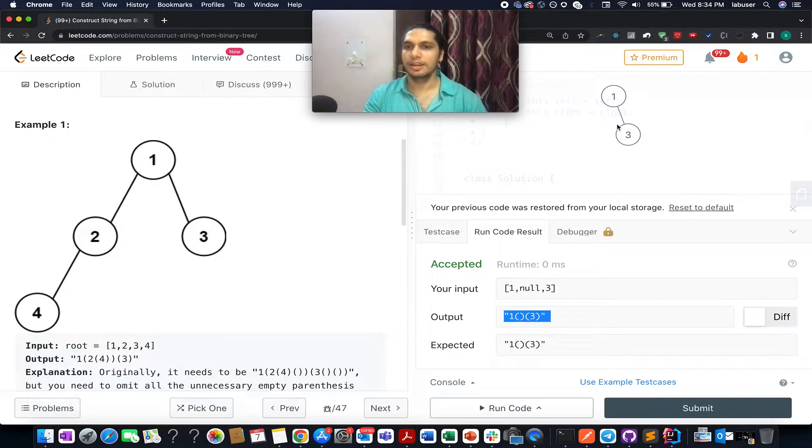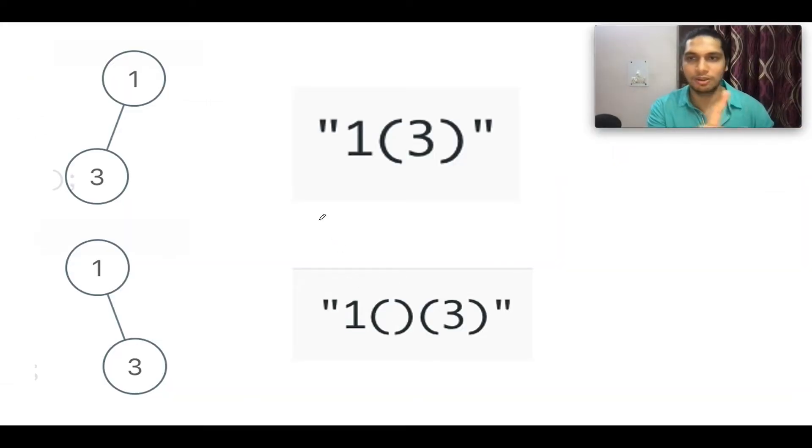This time the left child is null, however the right child has an element 3 over here. So let's run this up, and the output is something like this. The first element that we have is 1, followed by an opening bracket and a closing bracket.